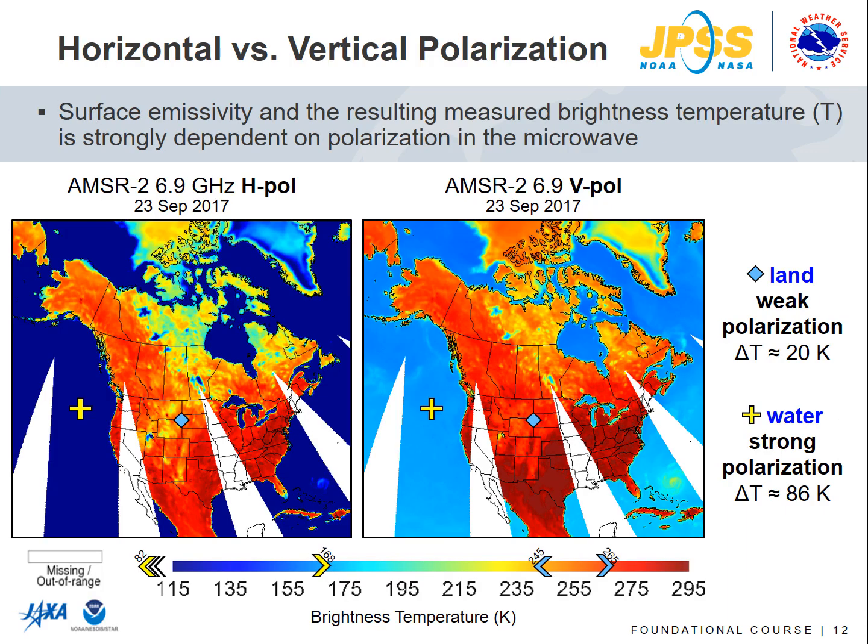Microwave surface emissivity and the resulting measured brightness temperature is strongly dependent on polarization. These images from the advanced microwave scanning radiometer at 6.9 GHz show horizontal polarization on the left and vertical polarization on the right. Comparing the two, a smaller temperature difference is observed over land — about 20 degrees — than over water where the difference is about 86 degrees, indicating generally weak polarization of land and strong polarization of water. Differences between horizontal and vertical polarization measurements can help determine if snow or vegetation is present.